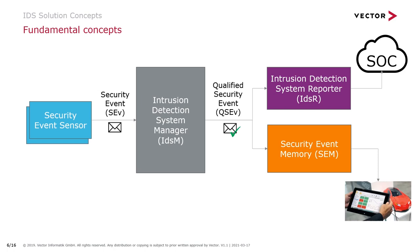Let's look at how security events are processed on an ECU. The basic idea is that a number of security sensors are available on the ECU. A security sensor is any piece of software that can report security events — it can be a basic software module or a software component. These security events are reported to a new AUTOSAR module called the Intrusion Detection System Manager, or IDSM. The IDSM can then filter incoming security events and drop any that are probably not relevant. The remaining events are called qualified security events.